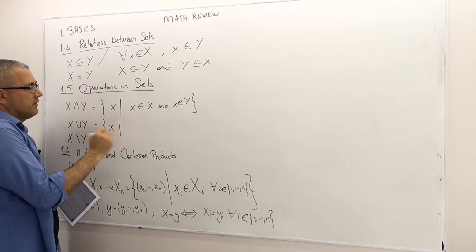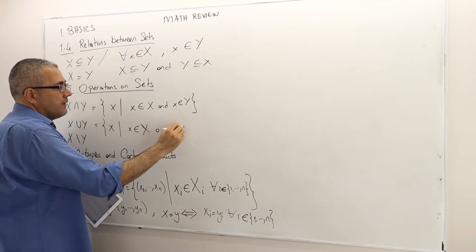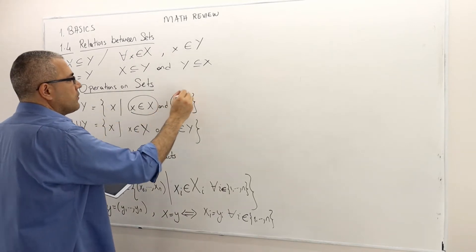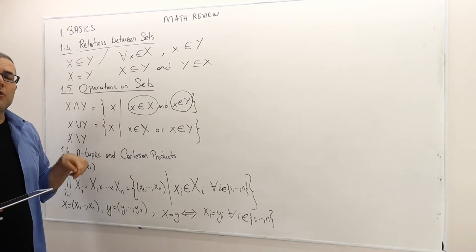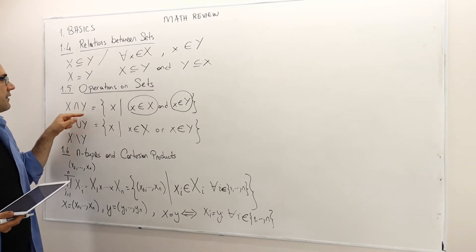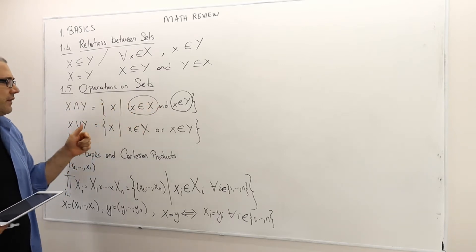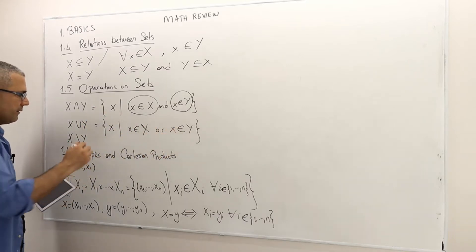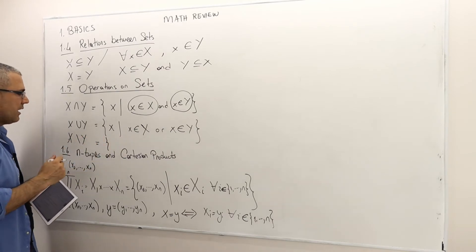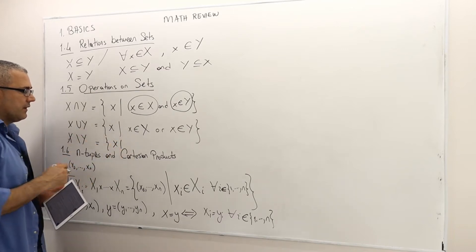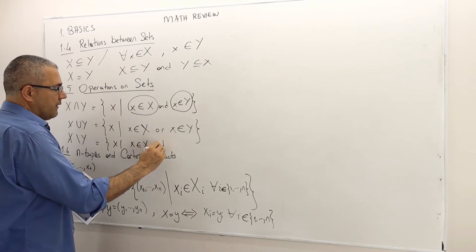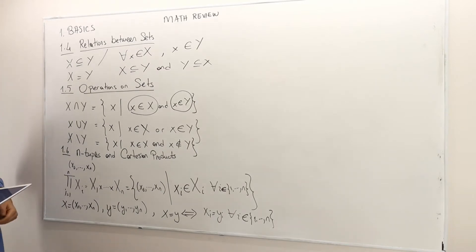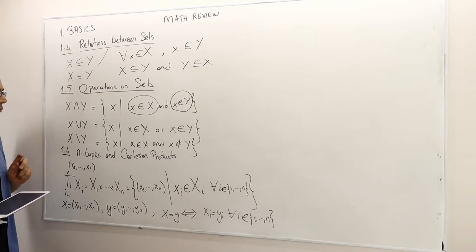X union Y is the set of x such that x is in X or x is in Y. So 'x is in X' is an atomic sentence, and 'x is in Y' is also an atomic sentence — they are either true or not. Therefore, X intersection Y is a conjunction of two atomic sentences, and X union Y is a disjunction. For X minus Y, this is the set of x's where x is in X and x is not in Y.